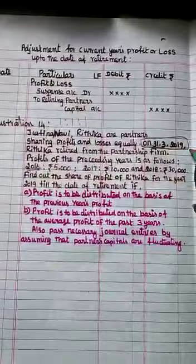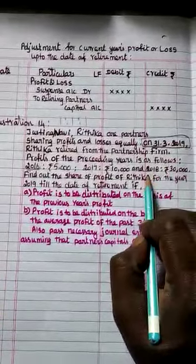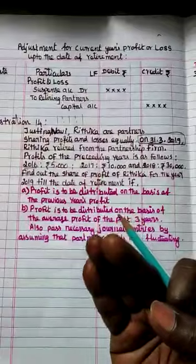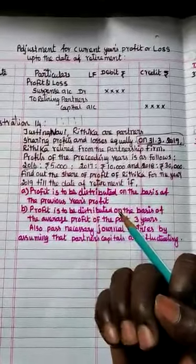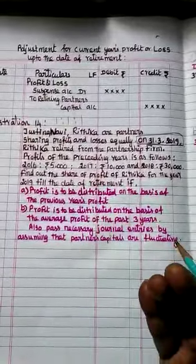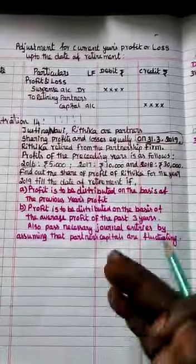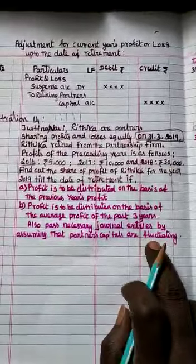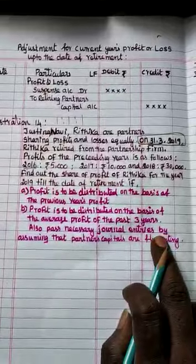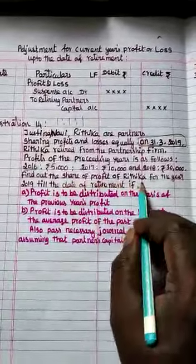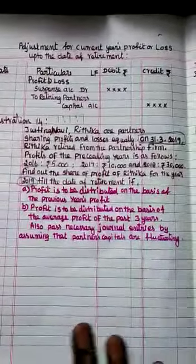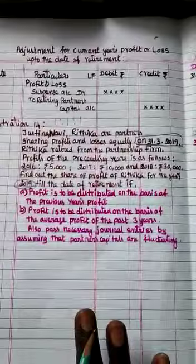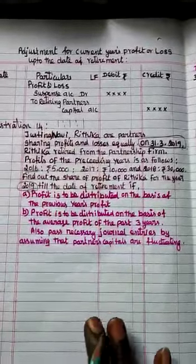On 31st March 2019 Hrithika retired. The academic year 2018 ended on 31st December, then the new academic year began on 1st January 2019. So from January, February, March — at the end of the 3rd month — Hrithika is retiring. She worked in the partnership firm from January to 31st March, and she is asking for her share of profit for those 3 months.